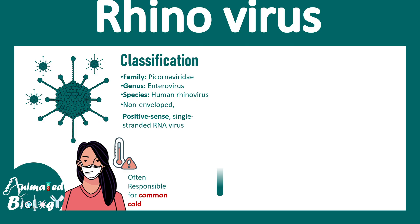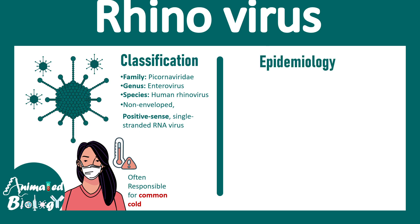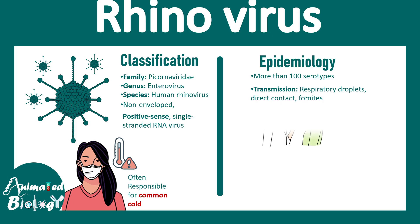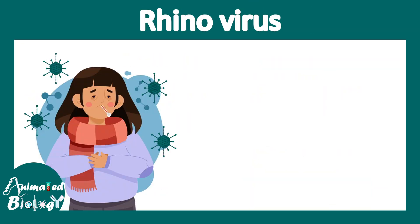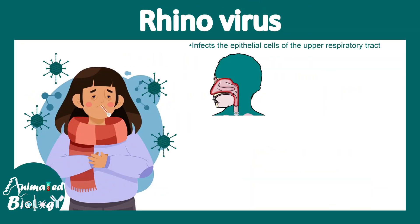Looking at the epidemiology: more than 100 serotypes exist for rhinovirus. Transmission generally happens via respiratory droplets, contact, or sometimes fomites. There are peaks of incidence in the spring and fall seasons.